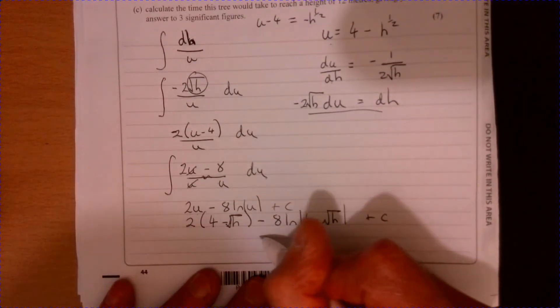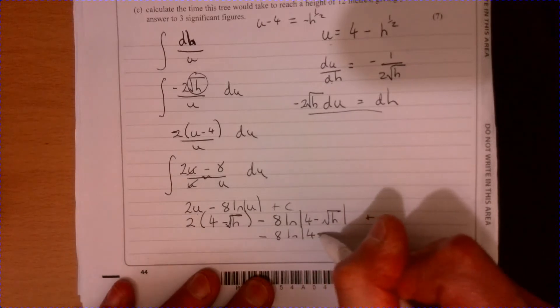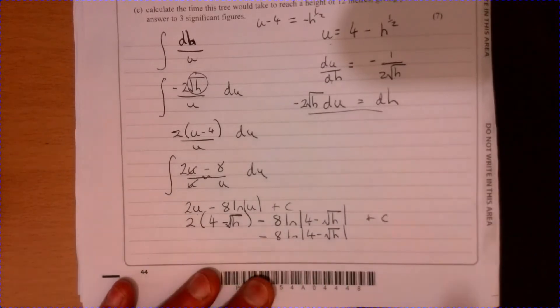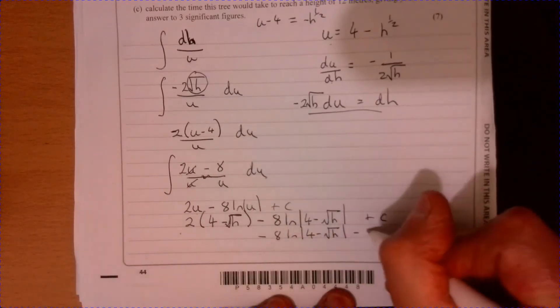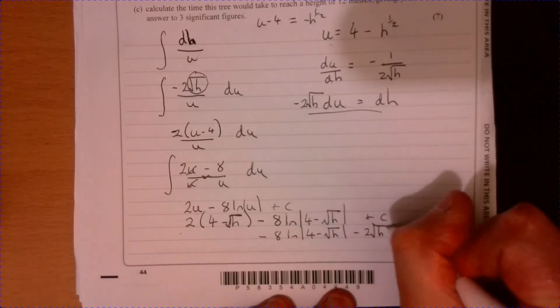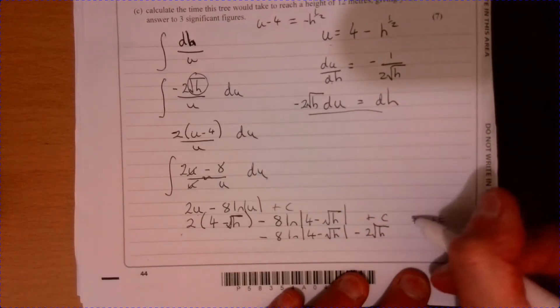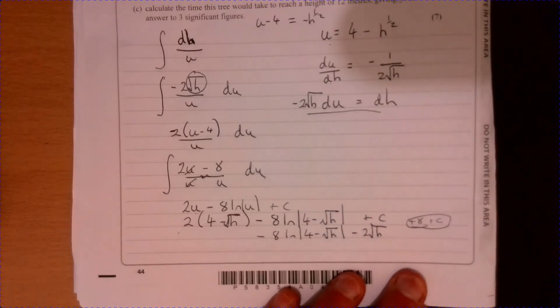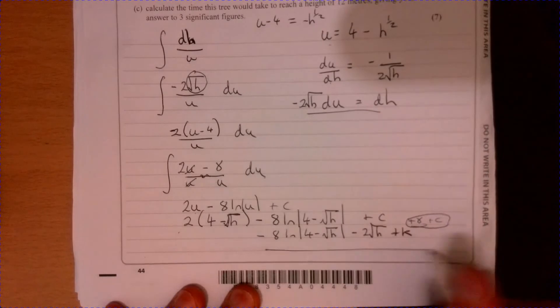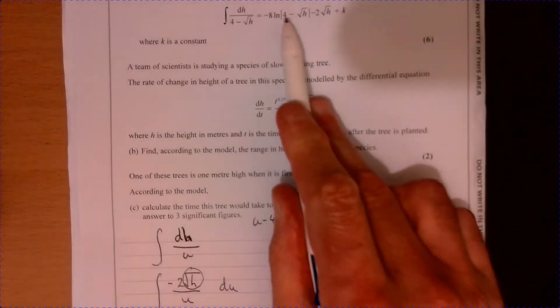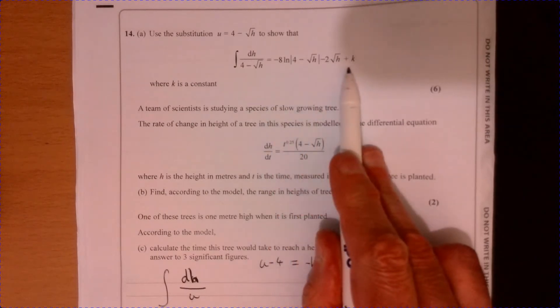If we multiply this out, that's going to give me 8 minus 8 ln 4. There we go, we're nearly there. And then we're going to have minus I'm going to get the minus 2 root h from over there. And then we've also got this plus 8 plus c. So here we're just calling that a constant there. And that is where we wanted to get to on the first part of the question.